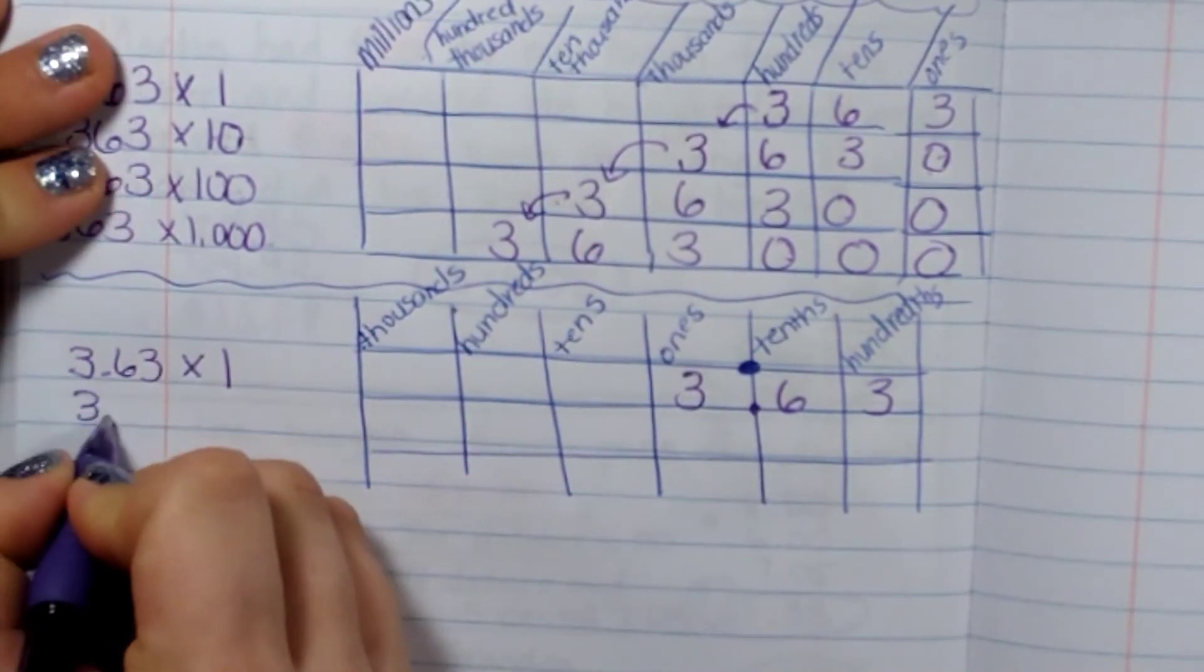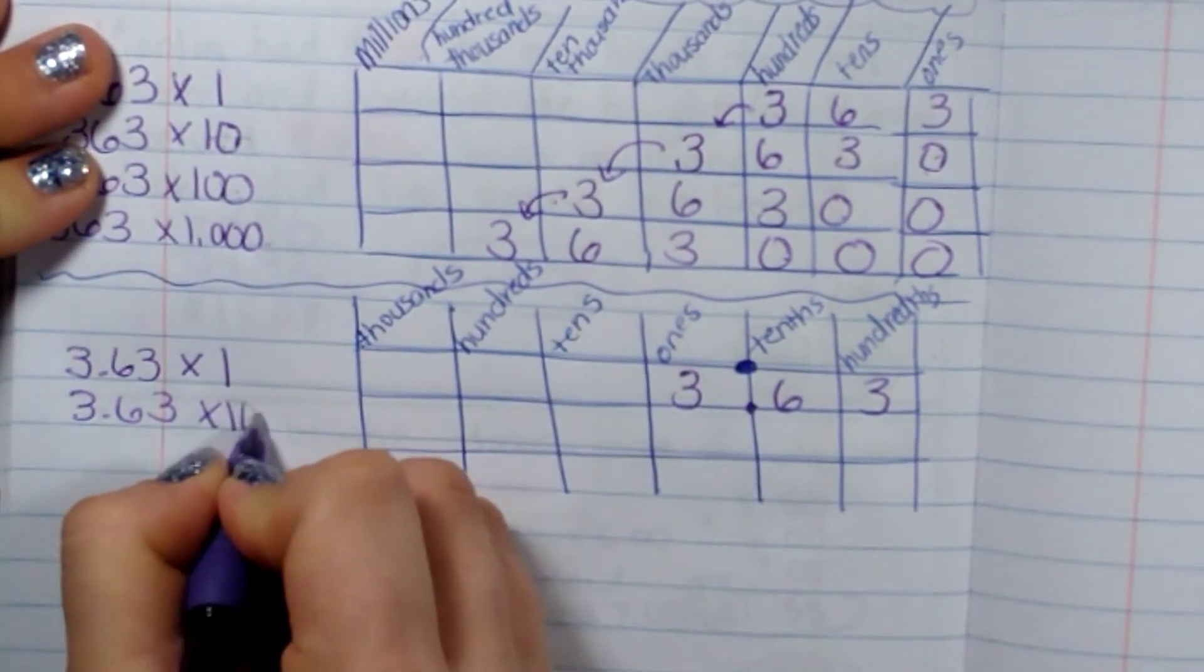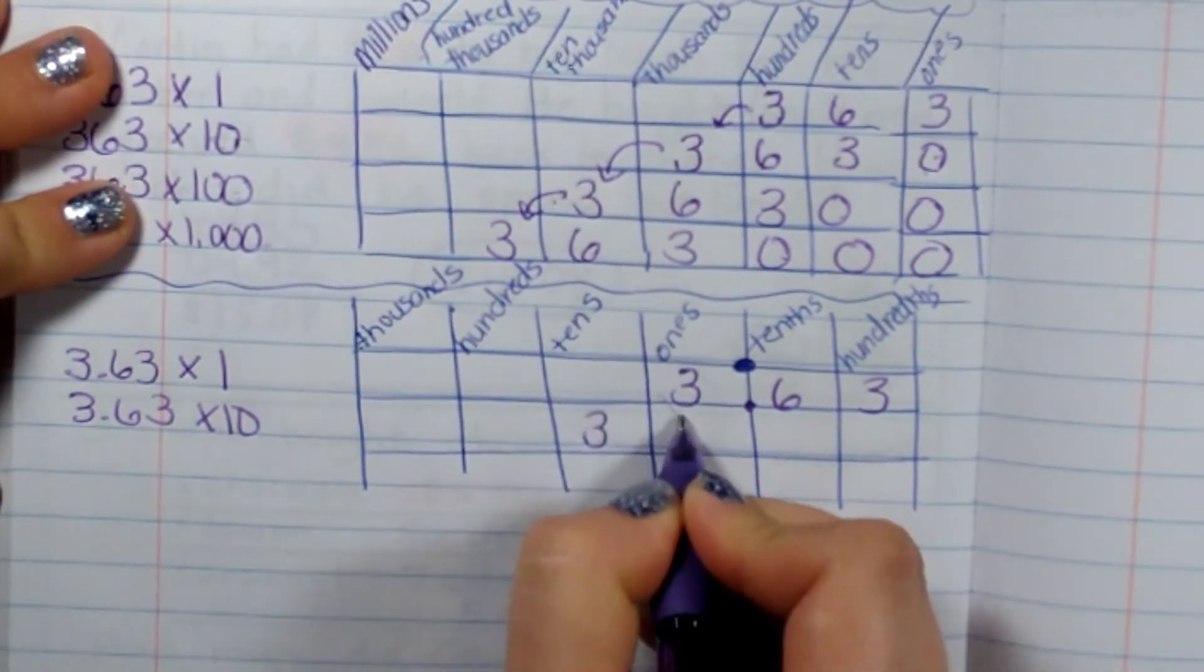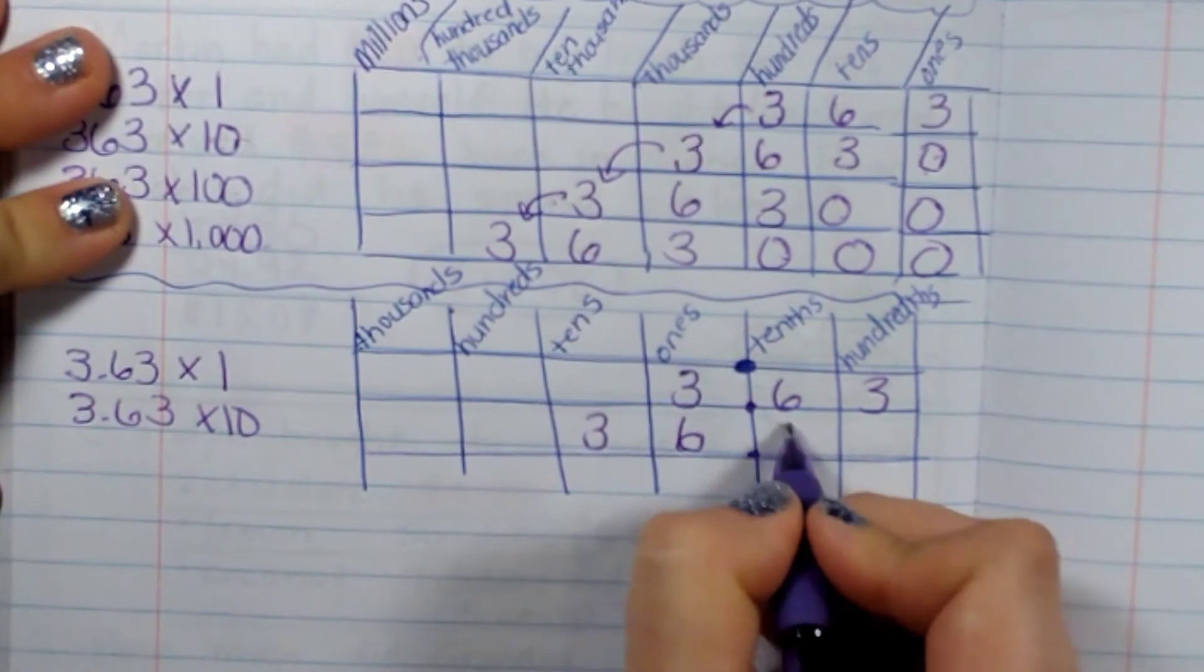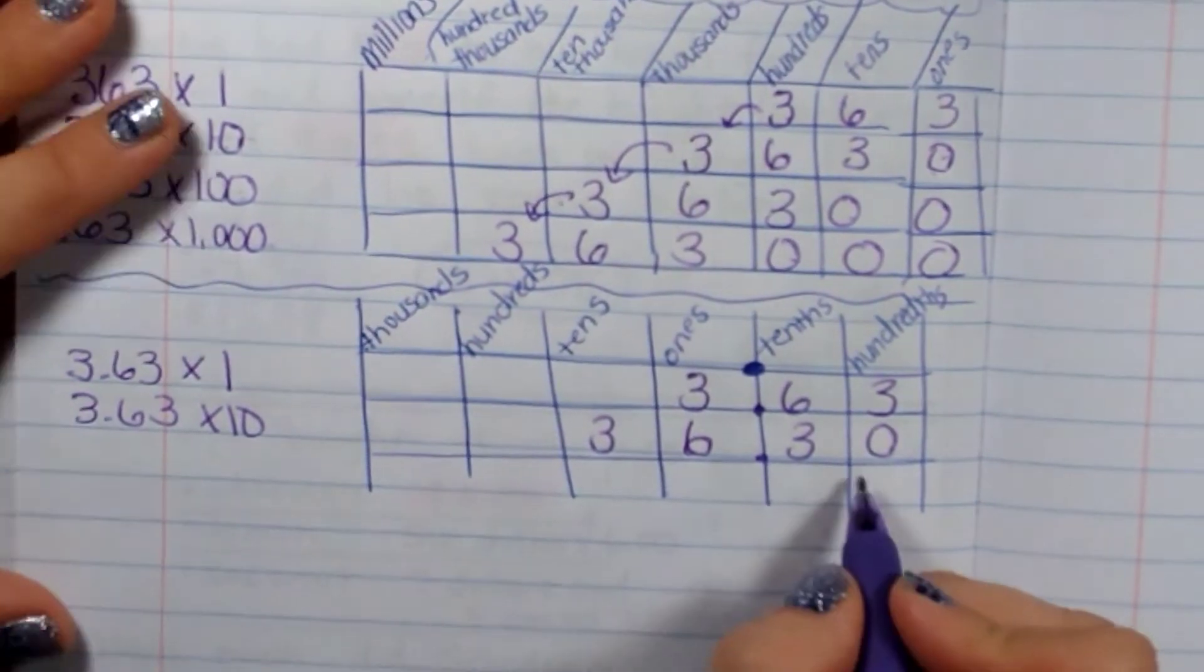If I was to multiply it by ten, I would move it over one because I'm moving my decimal place over one. So I would write it like this. Three and sixty-three hundredths.